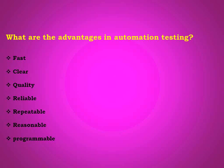Reasonable - we can reuse tests on different versions of an application even if the user interface has changed. Programmable - you can get hidden information from the application. These are the main advantages of automation testing.